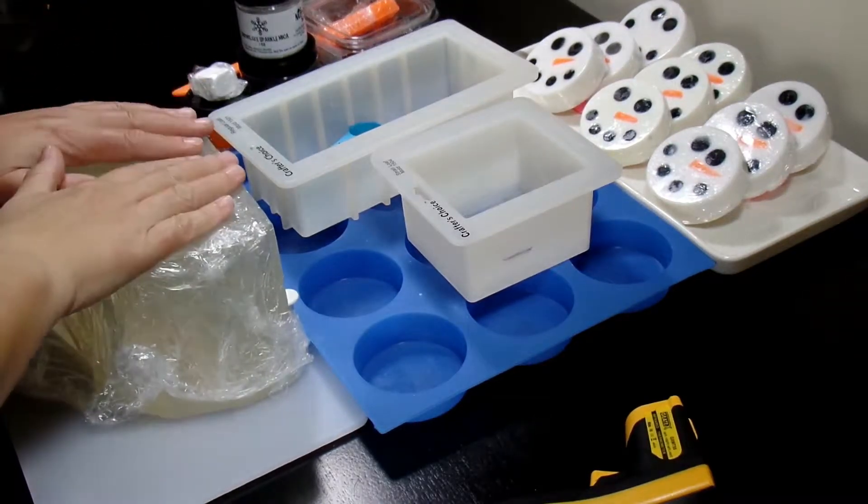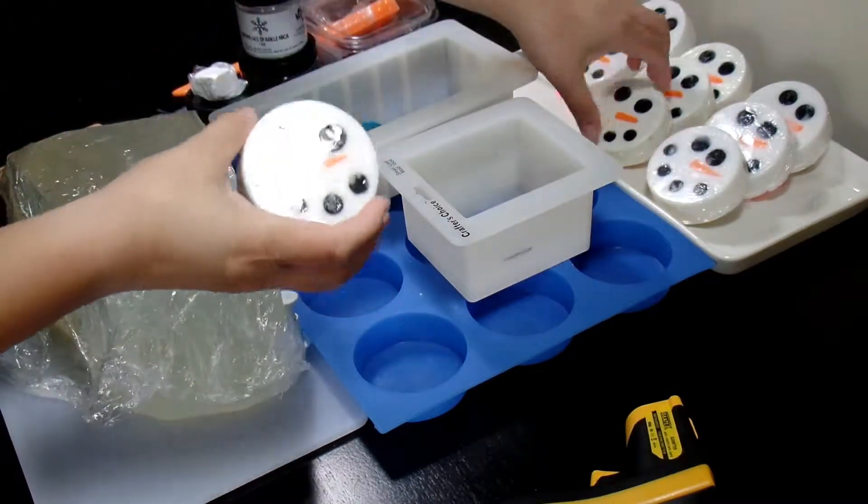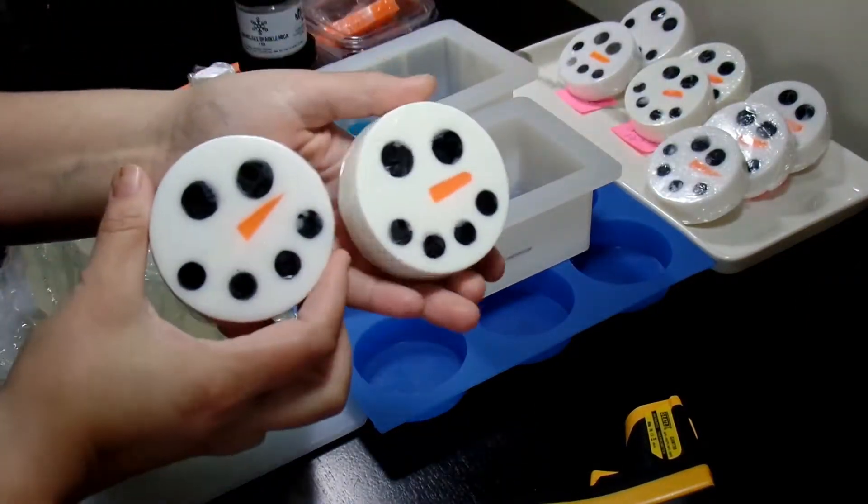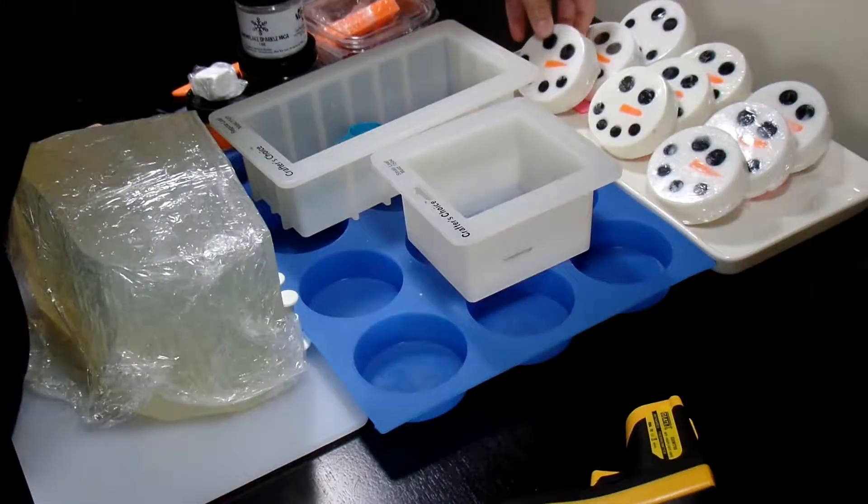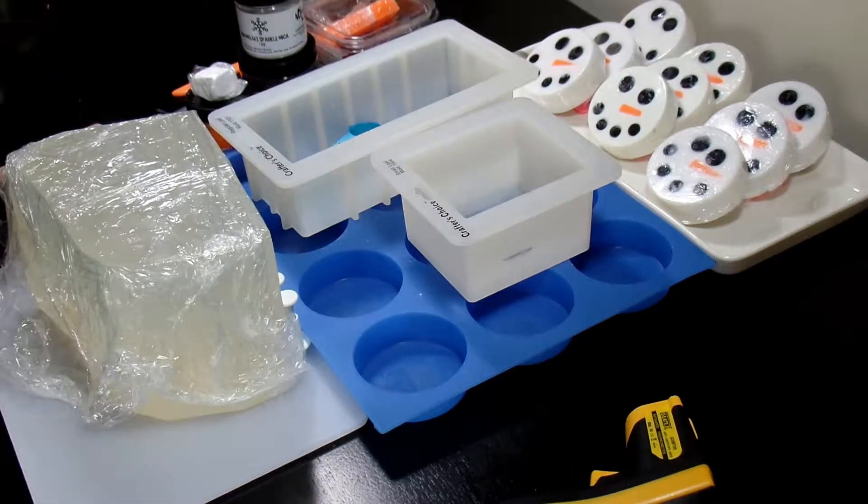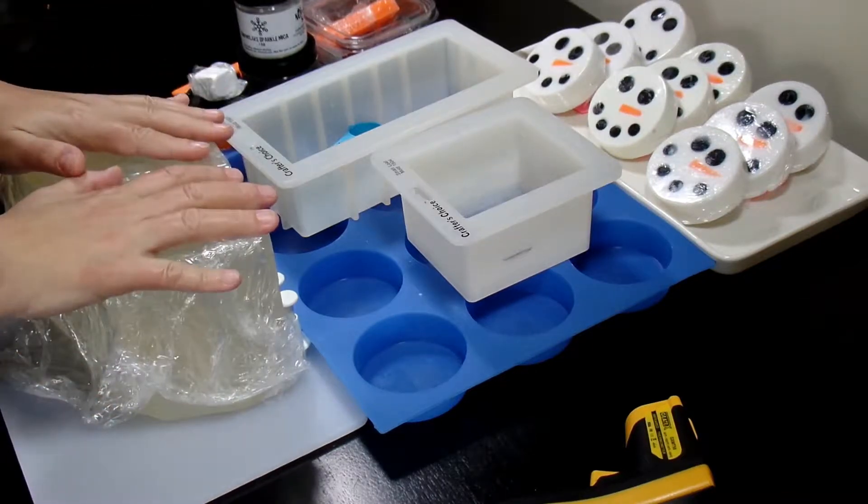Hey everybody, this is Penny. Welcome back to White Buoy Soaps. We are making snowman heads today. These little cuties here are part of our Christmas themed soaps. What you're going to need for this project is pretty lengthy, so I'm just going to go over the products that I have sitting here in front of me and list them in the bottom bar.